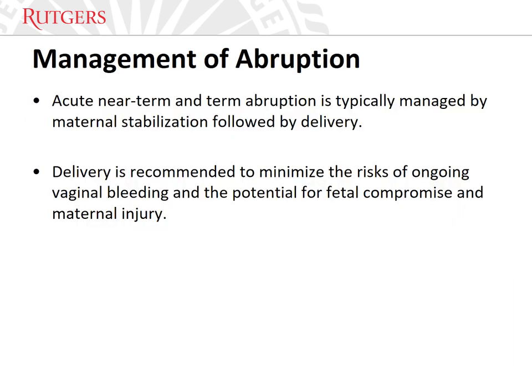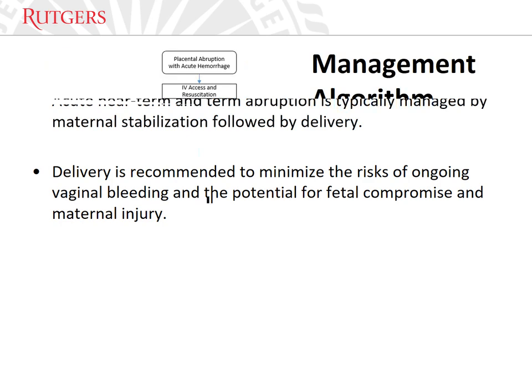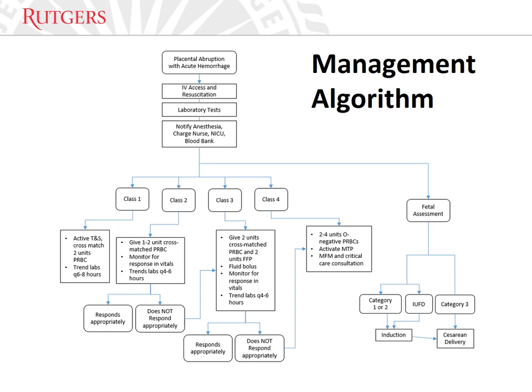Acute near-term and term abruption, whether mild or severe, is typically managed by maternal stabilization followed by delivery. Delivery is recommended to minimize the risks of ongoing vaginal bleeding and the potential for maternal and fetal compromise. An algorithm for the management of abruption at near-term and term gestations is presented here. At initial evaluation of new-onset vaginal bleeding, abruption severity should be ascertained through thorough history, evaluating the inciting event and quantifying estimated blood loss. Clinical evaluation should incorporate assessment of vital signs, urine output, and mental status. The advanced trauma life support classification of stages of hemorrhagic shock incorporates these parameters, though the staging system has not been validated in pregnancy.